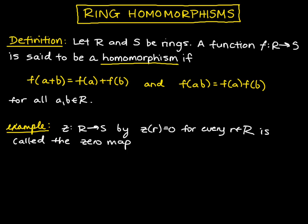And so is this a ring homomorphism? Well, let's see. If we do Z of A plus B, that is equal to zero, because A plus B is going to be some other element of R, and then every element of R by definition gets mapped to zero. And now we know that zero itself can be written as zero plus zero. The zero here is going to be equal to zero in S plus zero in S, and that's going to be equal to Z of A plus Z of B.